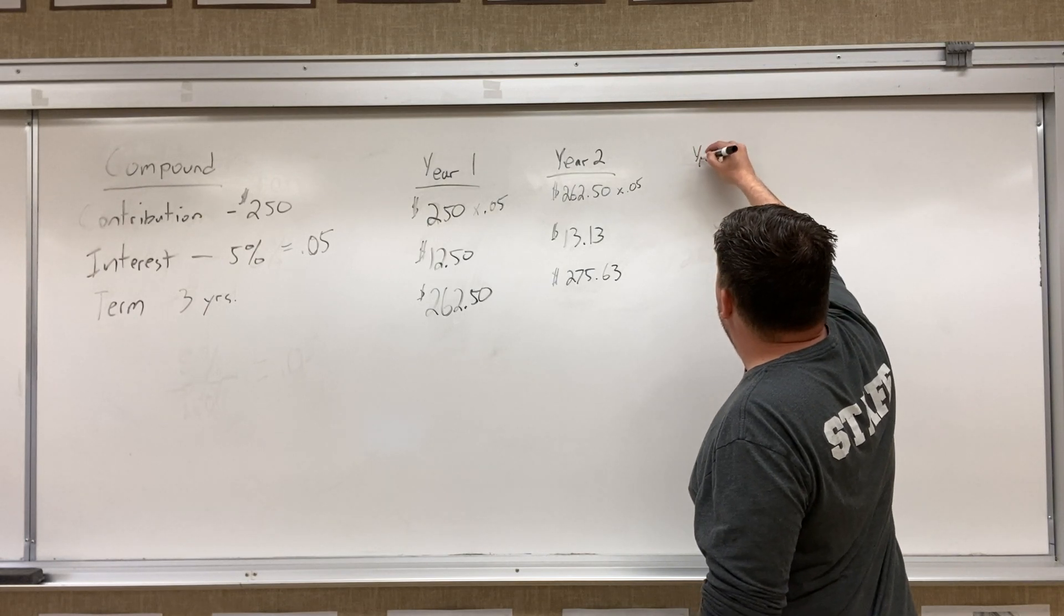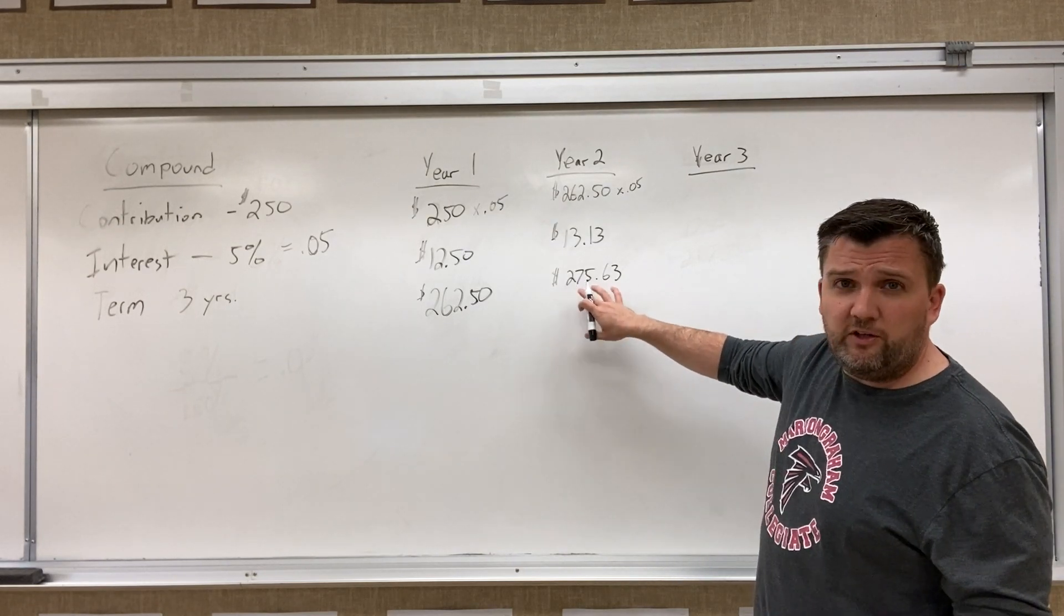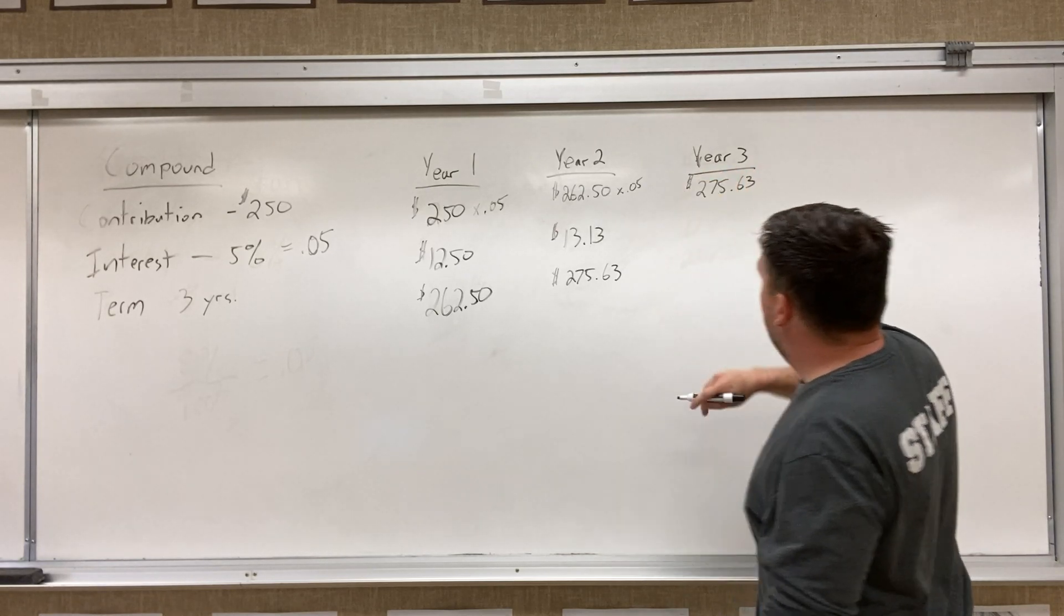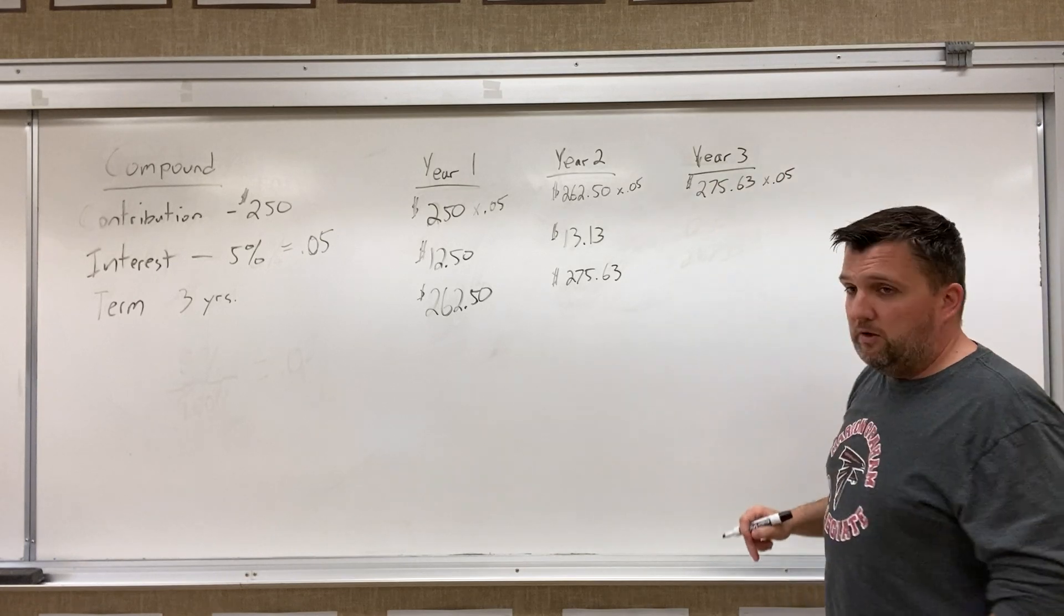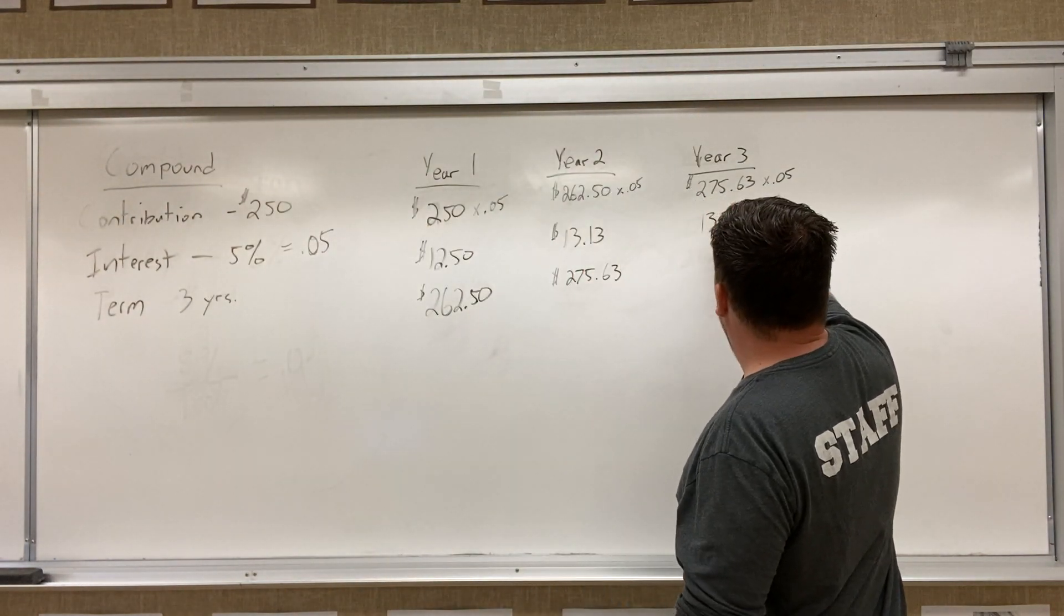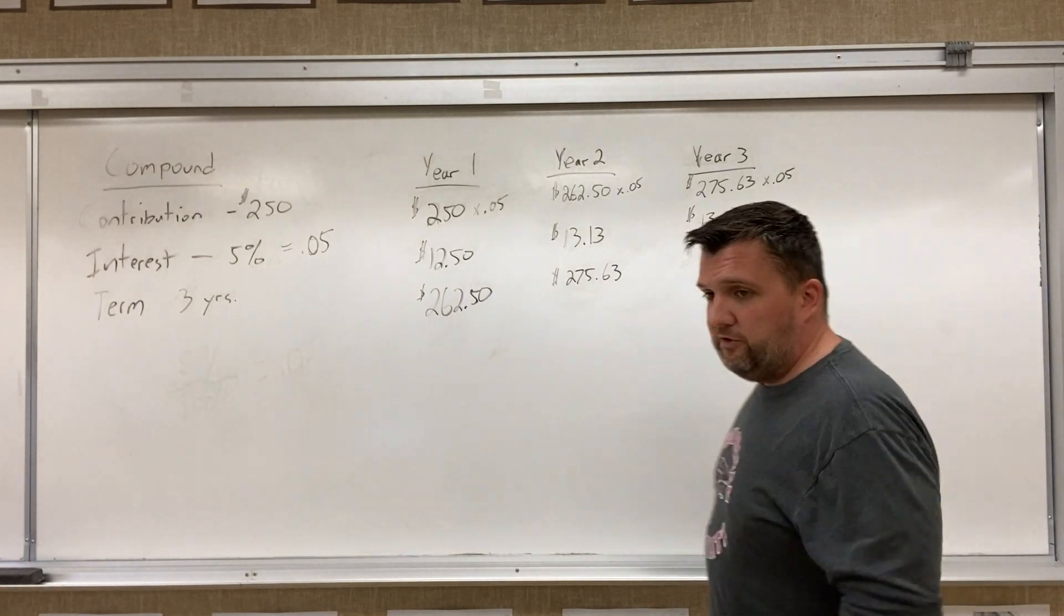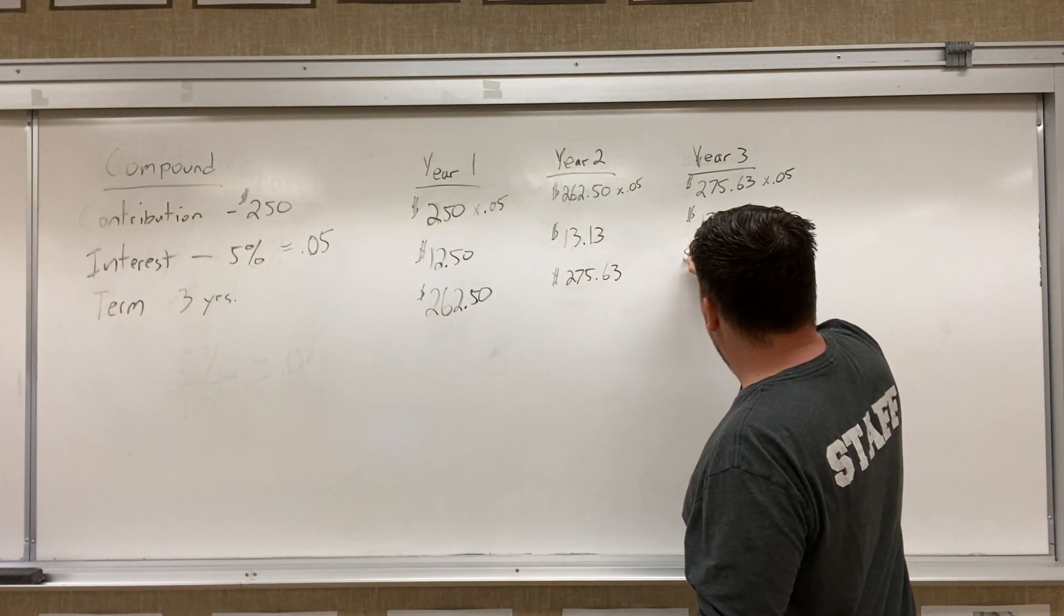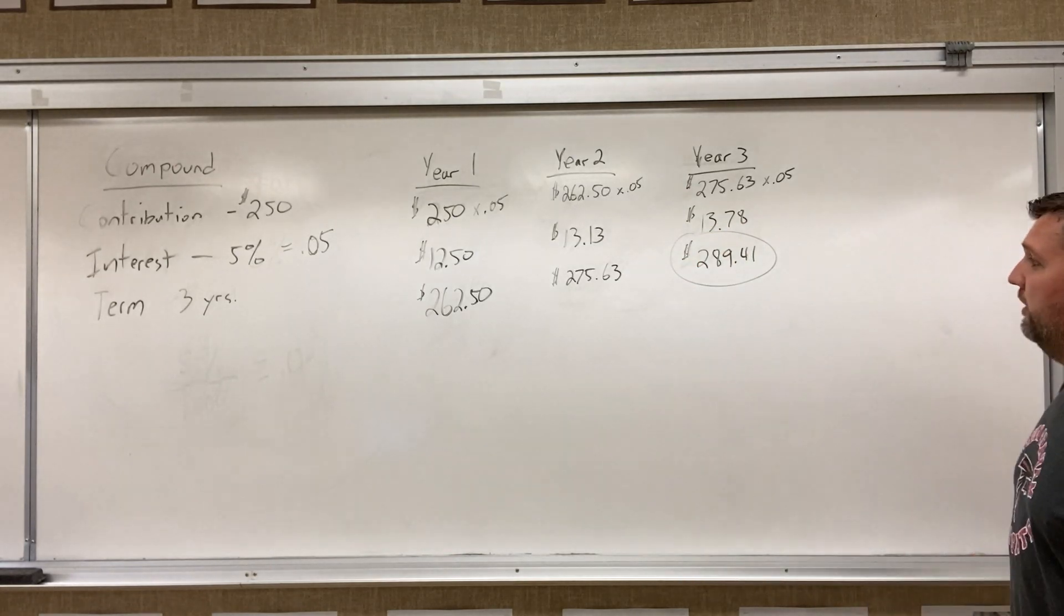Now, if we went to year three, we'd be starting with this amount, because remember, we get to make money off of our interest and what our investment was. So we do $275.63 as our starting amount for year three, and we get to make 5% interest off of that amount now, which is going to give us $13.78 for interest for the year. And when we add those numbers together, we should have $289.41 when everything's said and done. So at the end of that year, that's what will be left in our bank account.